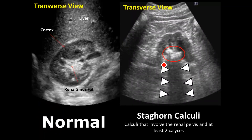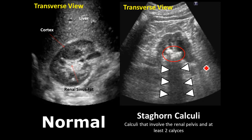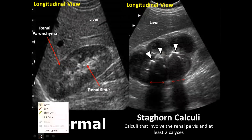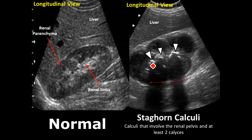Staghorn calculi are large calculi which involve the renal pelvis and at least two calyces of the kidney. This has heavier shadowing, but this is just a transverse view so we cannot appreciate it as well as the one in the longitudinal view. We can see multiple stones involving a much larger region compared to the solitary stone seen earlier, with acoustic shadowing behind each stone.